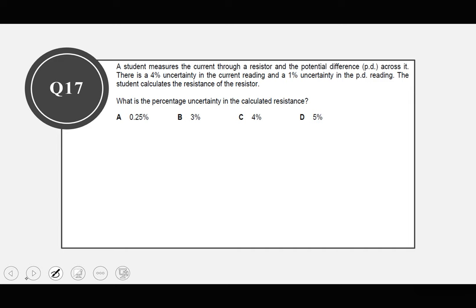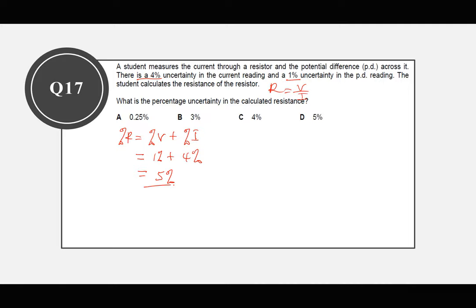Question 16: a student measures the current I through a resistor with 4% uncertainty and the potential difference V with 1% uncertainty. Using R = V/I, the percentage uncertainty in R equals the percentage uncertainty in V plus the percentage uncertainty in I: 1% + 4% = 5%.